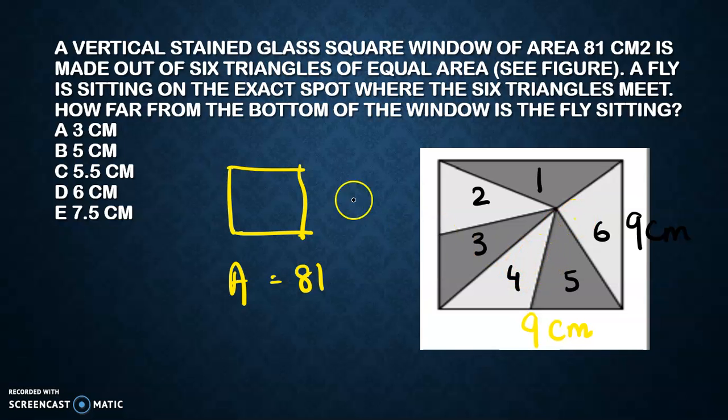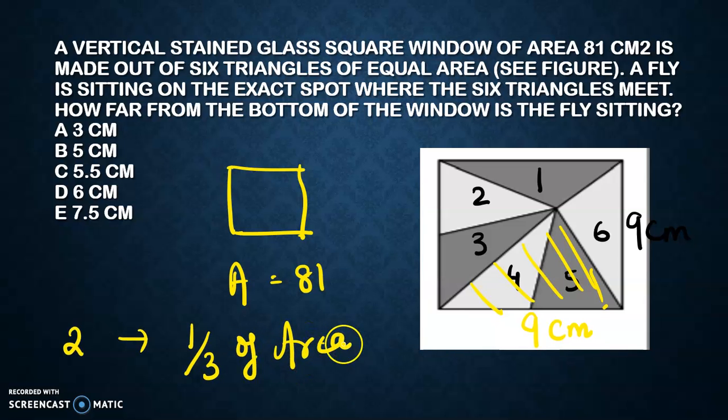A fly is sitting on the exact spot where the six triangles meet, and all six triangles have equal area. If you consider only these two triangles, two triangles will occupy one-third of the area because all of the areas are equal. So one-third of 81 will be 27 cm². My area of this is 27 cm² and I have to find the height.